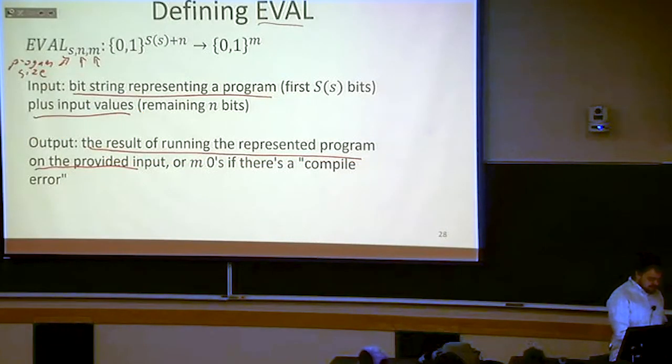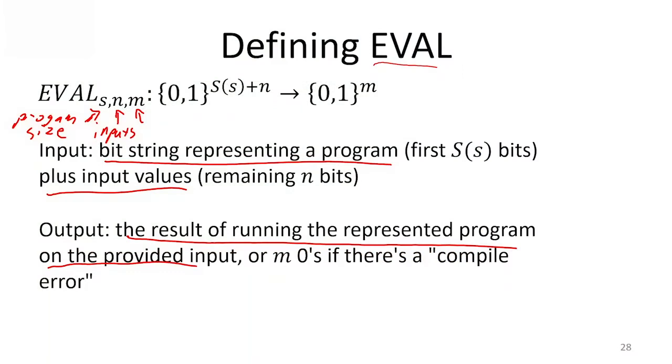We need the number of inputs. This eval function is only going to work if you have the proper number of inputs. We're going to say something like, this is the eval function that will simulate any 27 line program that's got 8 input bits, or something like that. And then we're also going to need the outputs here.